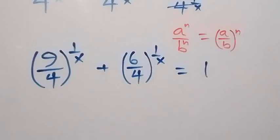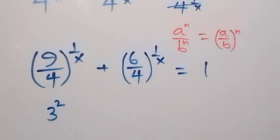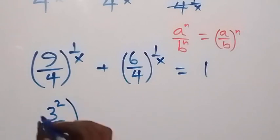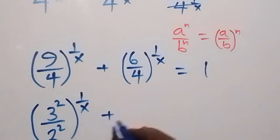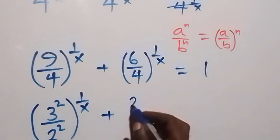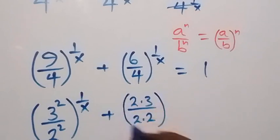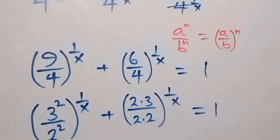From here, 9 can be written as 3 squared — that is 3 times 3, which is 9. Also, 4 can be written as 2 squared. Then raise to power 1 over x. Plus, we can write 6 as 2 times 3, and 4 as 2 times 2, then raise to power 1 over x. Now it equals 1.